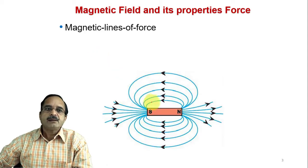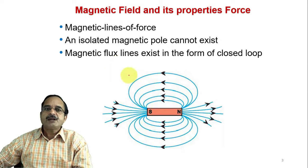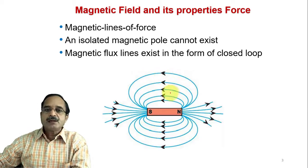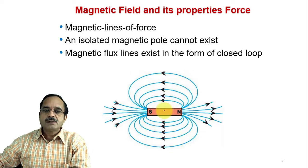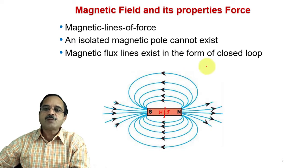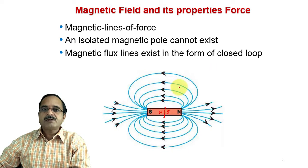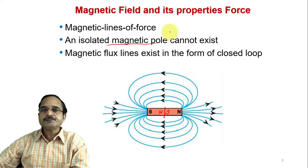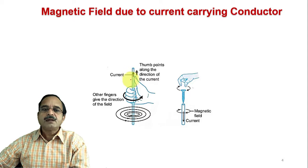Before going to the exact statement of Biot-Savart law, let us discuss some basics. If we consider a magnet, the magnetic lines of force are produced surrounding the magnet, and the magnetic flux lines always exist in the form of closed loops. The isolated magnetic pole cannot exist — if you cut a magnet into two pieces, it will immediately form a north pole and south pole.